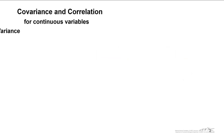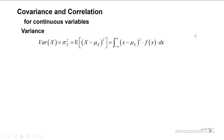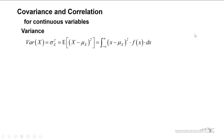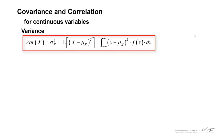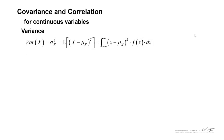For continuous variables, we can define variance as the integral of x minus the mean of x, quantity squared, times f of x dx, and this is similar for discrete distributions. In contrast, when we have bivariate data, we refer to something known as covariance.